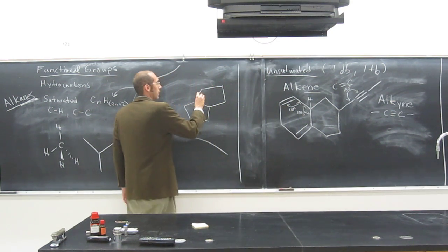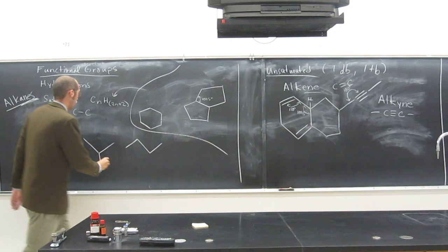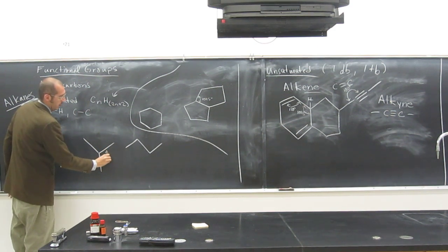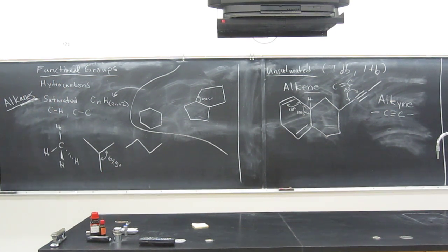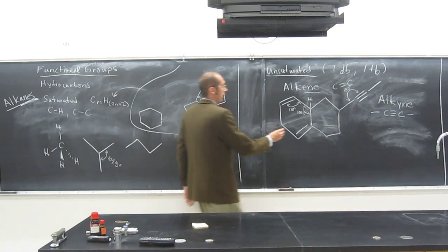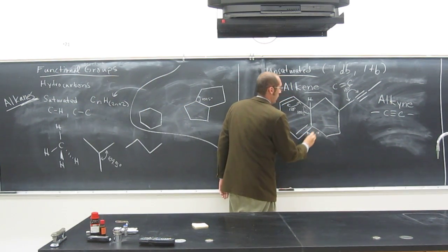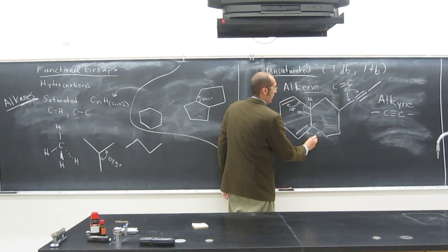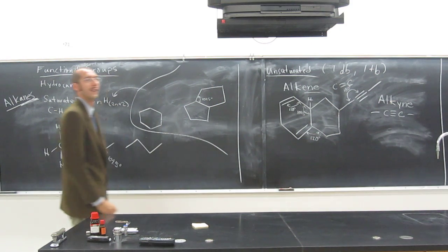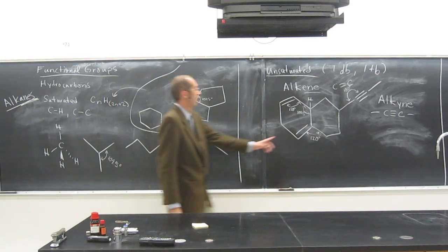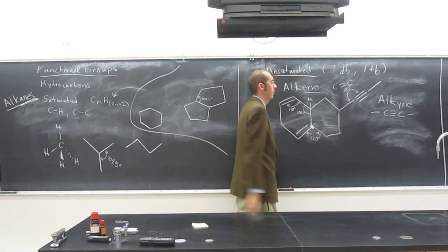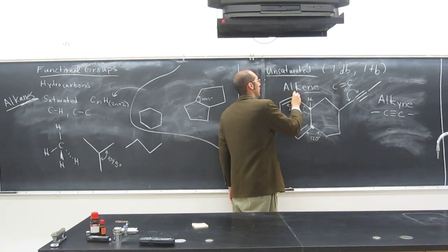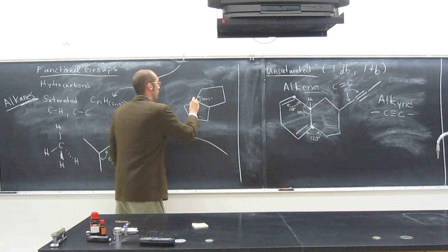So what's the bond angle here? 109.5, and here? 109.5, right? What about here? 120. Why? Because this carbon has a double bond to it. So this carbon here, trigonal planar. This carbon here is tetrahedral. This one's trigonal planar. This one's tetrahedral.